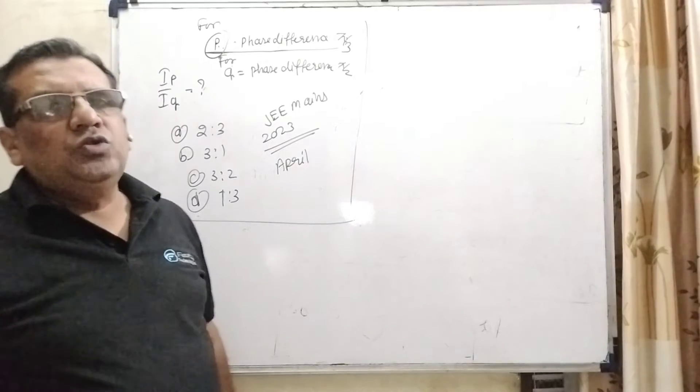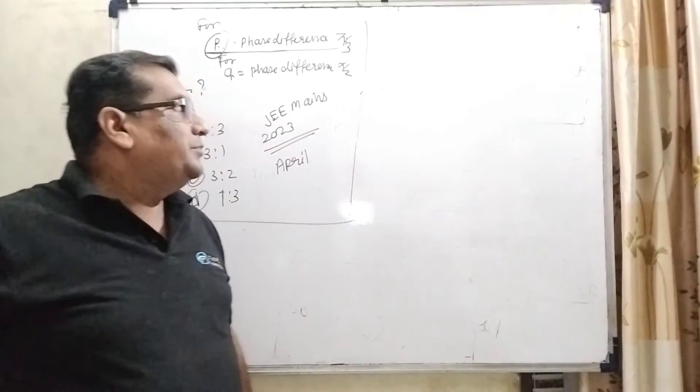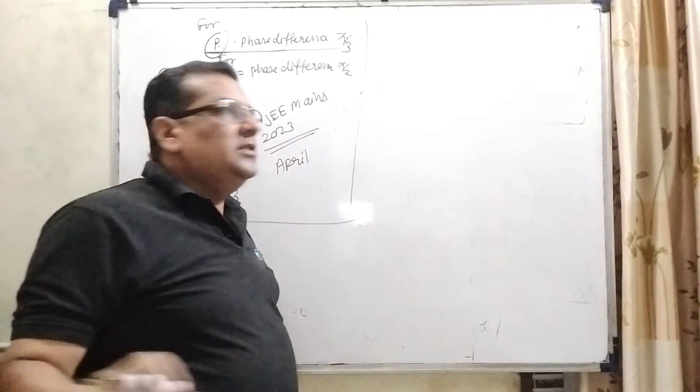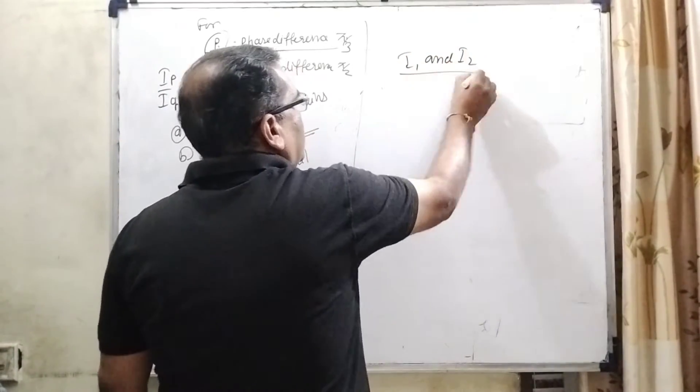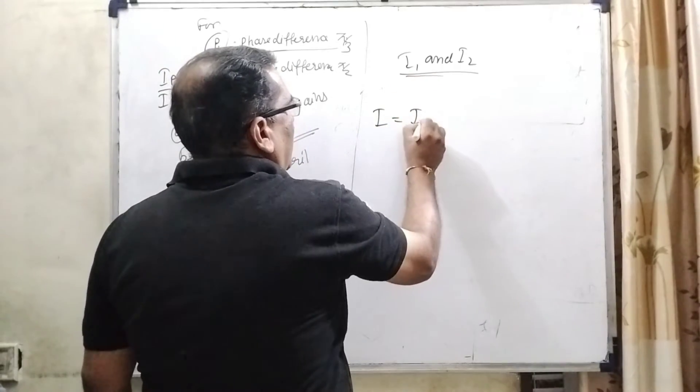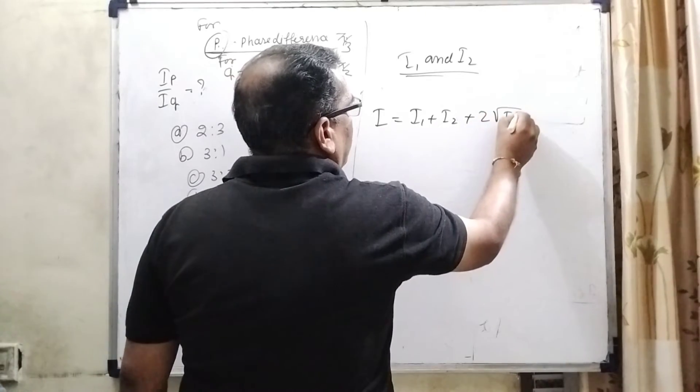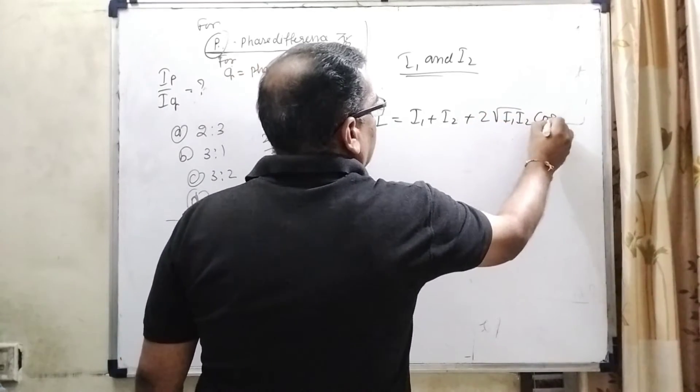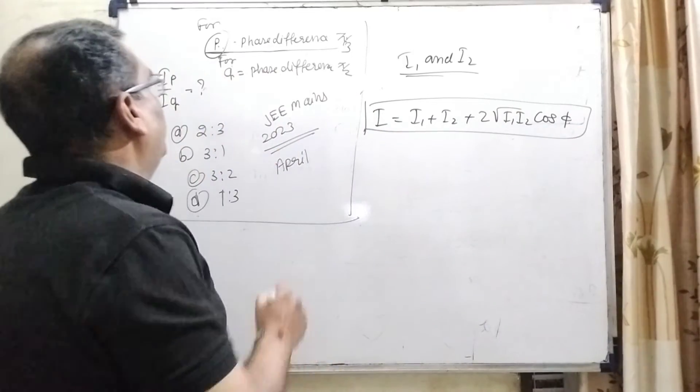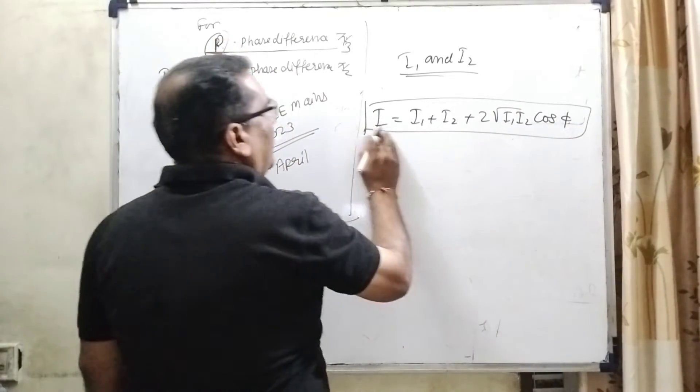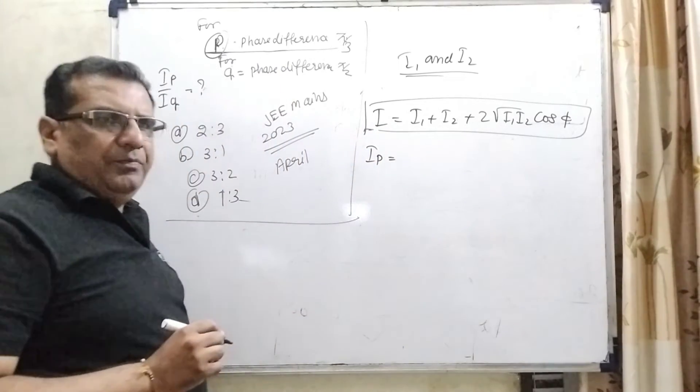This question is based on superposition of two waves at the same point. And here, using the intensities, consider I1 and I2. Then resultant intensity is equal to I1 plus I2 plus 2 root I1, I2 cos phi. This formula we are using and for point P, here we have considered net resultant intensity IP.